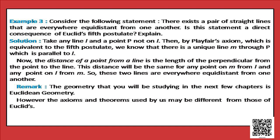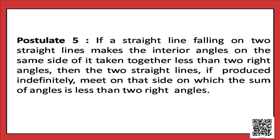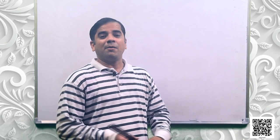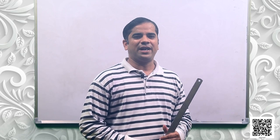The geometry you will study in the next few chapters is Euclidean geometry, though the axioms and theorems used may differ from those of Euclid. Students, let us recall postulate 5. It says: if a straight line falling on two straight lines makes the interior angles on the same side of it taken together less than two right angles, then the two straight lines, if produced indefinitely, meet on that side on which the sum of angles is less than two right angles.